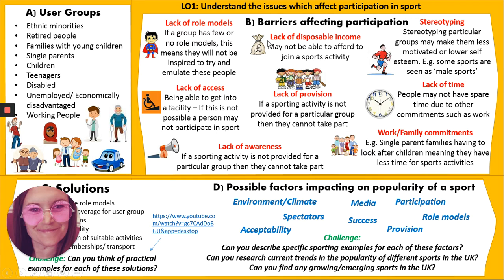Then we have section B, barriers affecting participation. What is a barrier? Can you give examples? There are plenty of examples on screen and these are the ones you're going to need to know. Can you relate them specifically to a user group? For example, let's take lack of disposable income — may not be able to afford to join a sports activity. Link it to a user group and then think why they might not be able to afford it, what is stopping them. Write a summary of which barriers affect which user groups and think about whether these barriers can be applicable to more than one user group.